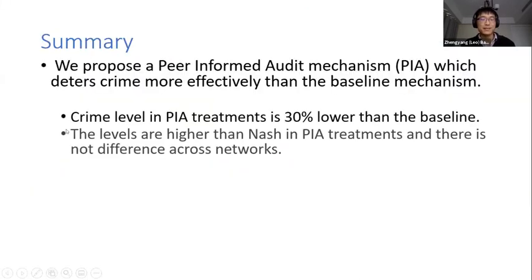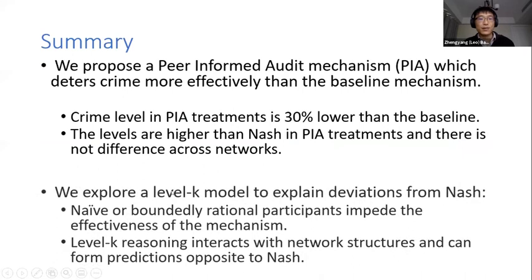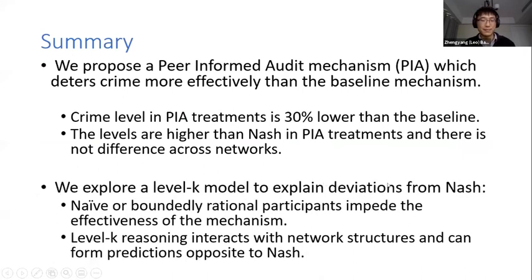To sum up, we propose a PIA mechanism which in theory deters crime more effectively than the baseline mechanism in any non-empty network. We find that crime levels in our PIA treatments are 30% lower than the baseline, though there are discrepancies between Nash predictions and actual data. We explore a level-K model to explain these puzzles and find that the effectiveness of our mechanism depends on players' sophistication levels — the more sophisticated they are, the more effective the mechanism. We also find that level-K reasoning interacts with network structures and can form predictions opposite to Nash.